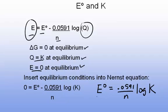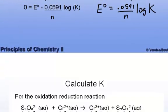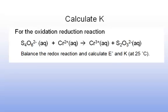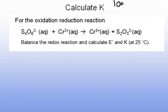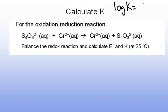So now, if we have the standard potential, we can calculate K, the equilibrium constant, or vice versa. Let's take a look at an example of calculating K. Since I want to calculate K, I can rearrange that equation and solve for log K equals n times the standard cell potential divided by 0.0591.